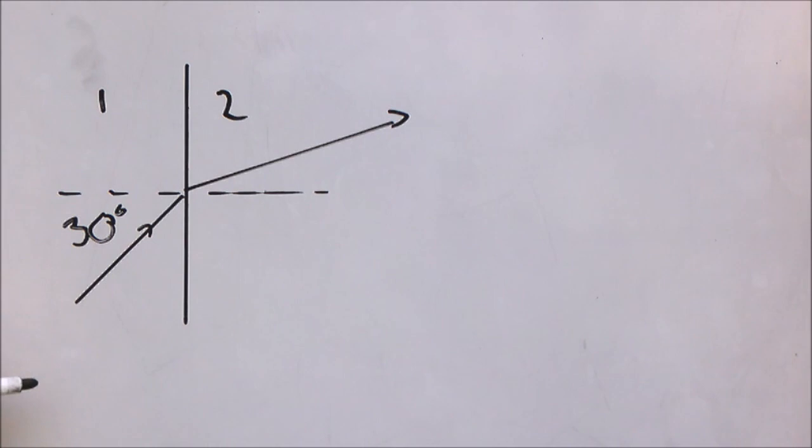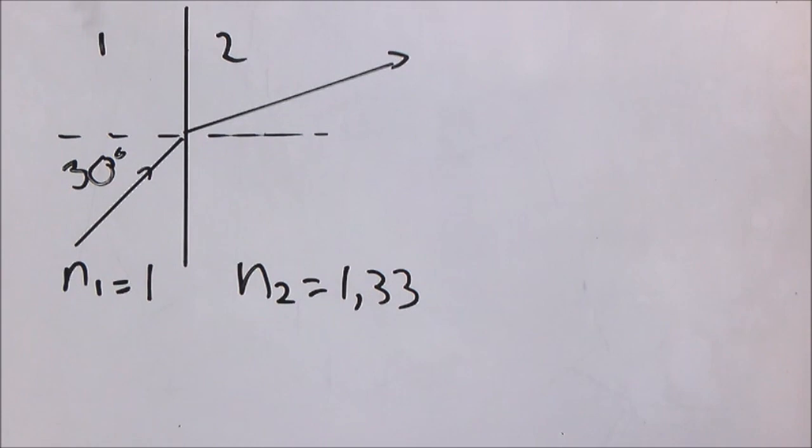From our data we know that N for air is 1, and N for water is 1.33.